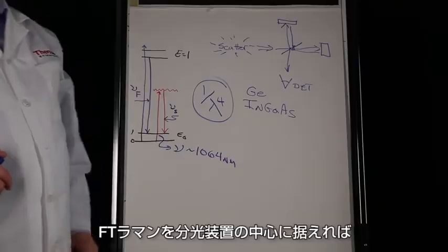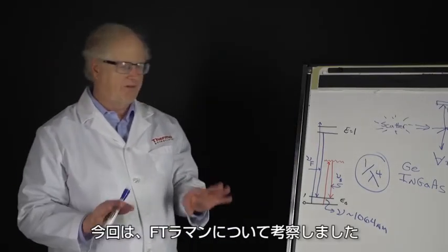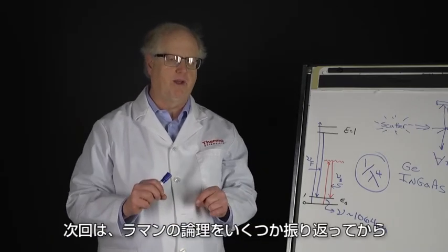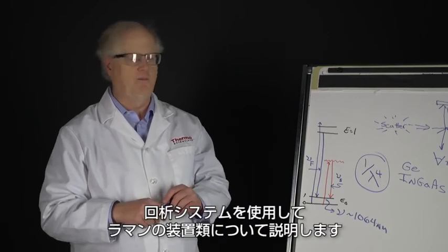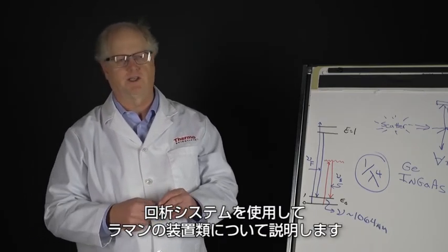That's the basic idea behind FT Raman: you're avoiding fluorescence by not giving it enough energy, you're worried about the one over lambda to the fourth efficiency. It just fits right into the core seat of the spectrometer. Now let's look back at some of the theory of Raman and then move into the Raman instrumentation using diffraction systems.